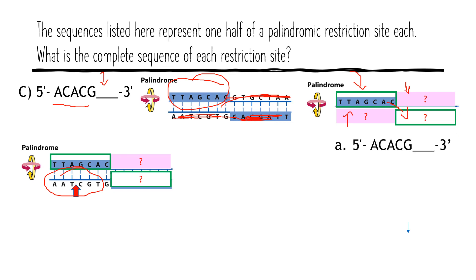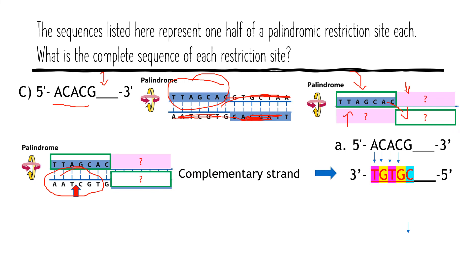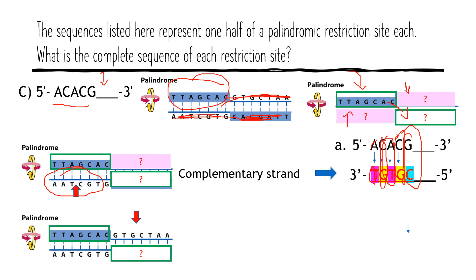Let's find the complementary. The complementary to A will be T, the complementary to C will be G, the complementary to A will be T, the complementary to C will be G, and the complement to G will be C. Pretty easy. Now we start with this one, we got this one, and now we are going to find the other one.